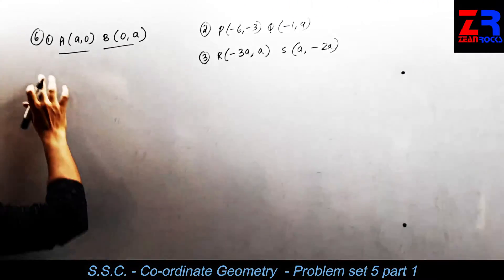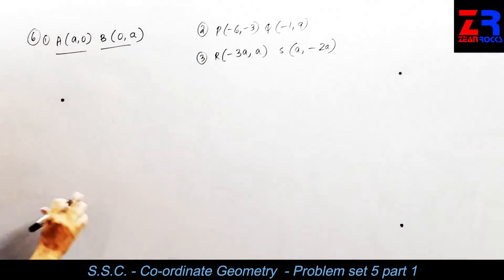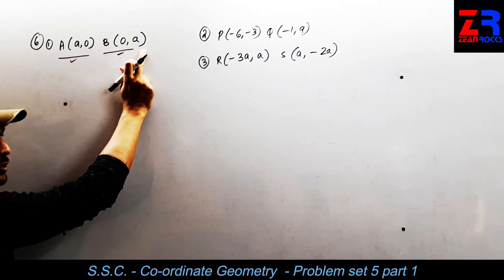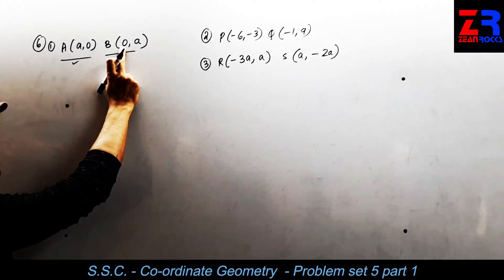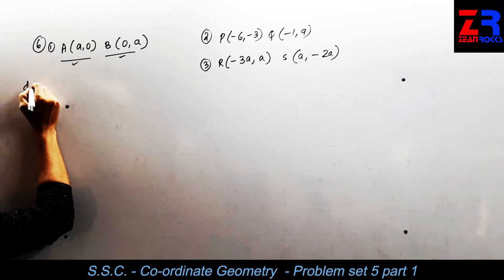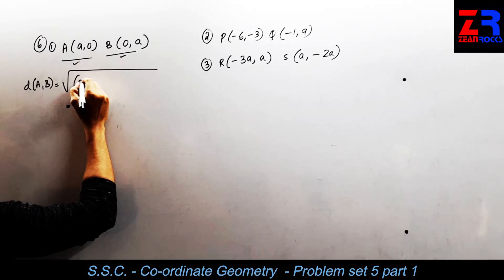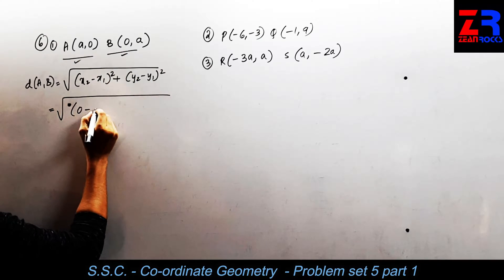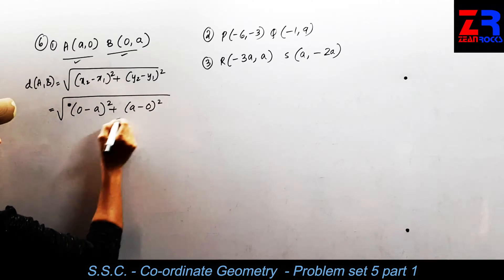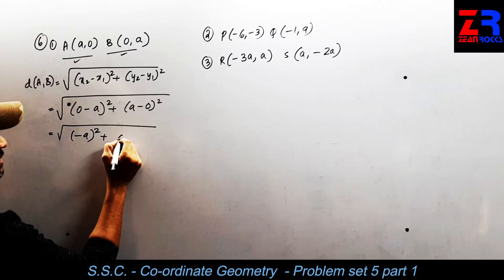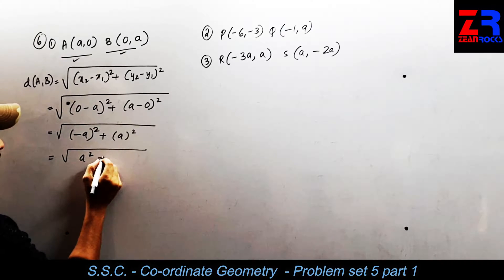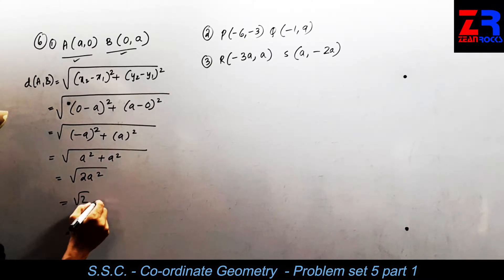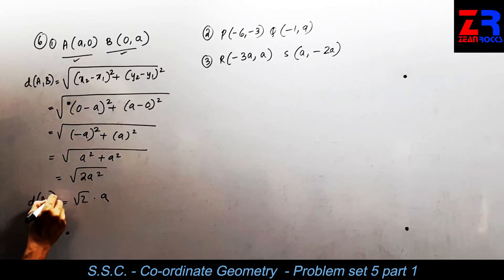This is the last question of today's lecture, question number 6 — there are 3 sub-questions asking us to find distances. For distance AB: x1 equals A, y1 equals 0, x2 equals 0, y2 equals A. The distance formula gives square root of (0 minus A)² plus (A minus 0)², which is square root of A² plus A², equals square root of 2A², equals root 2 times A.